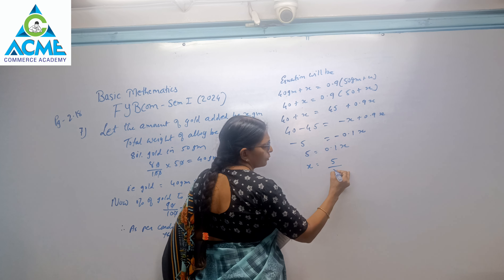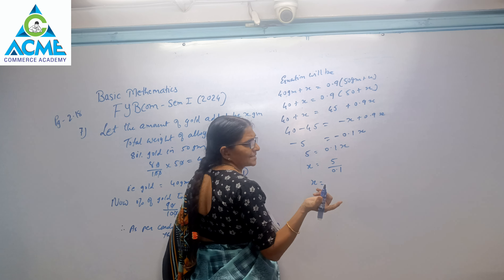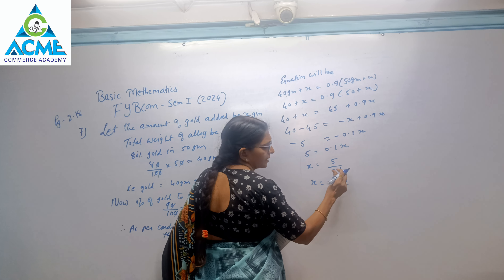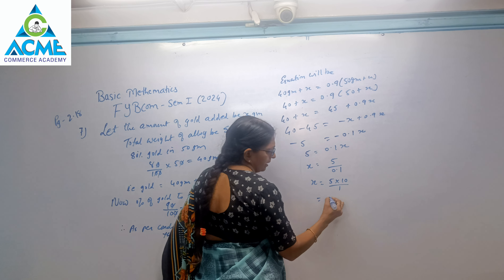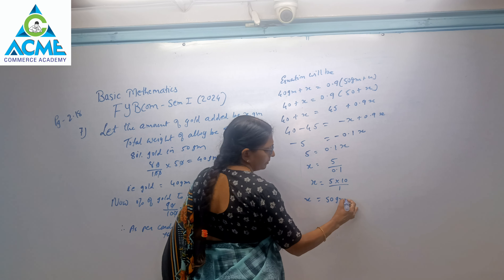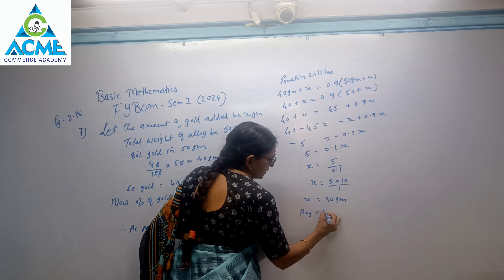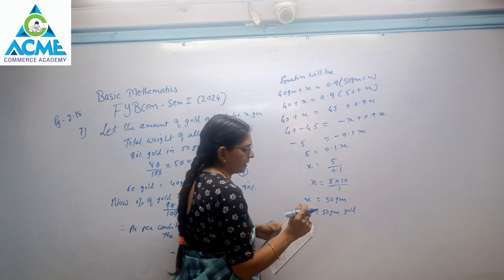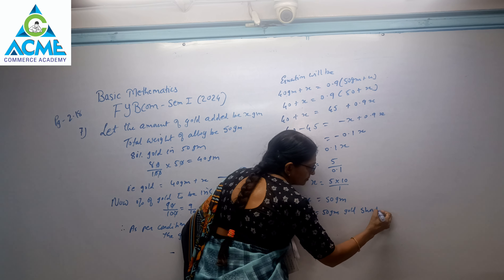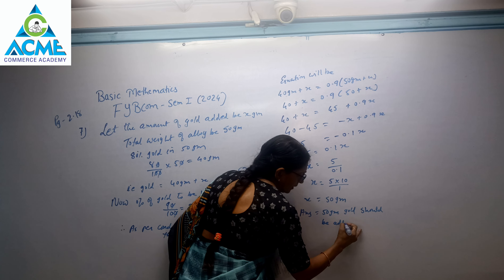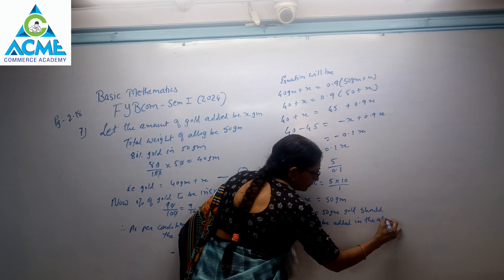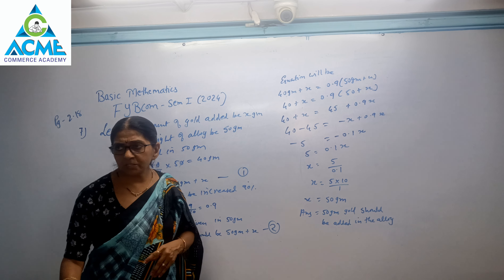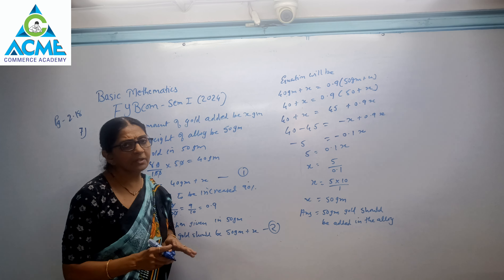Therefore x = 5 upon 0.1. We can calculate this as 5 × 10 upon 1 — since there is 1 decimal digit, we multiply top by 10. The answer is x = 50 grams. So, 50 grams of gold should be added to the alloy so that the percentage of gold becomes 90%.